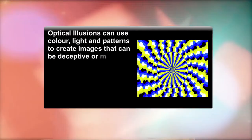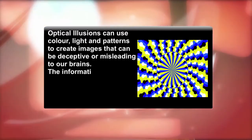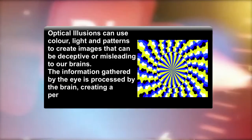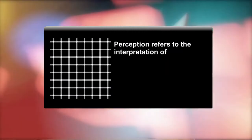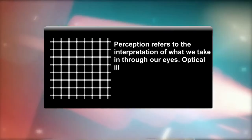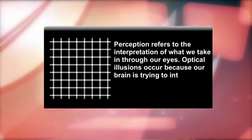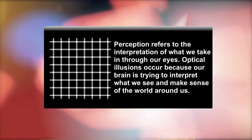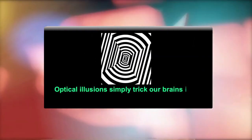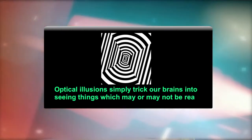Optical illusions can use colour, light, and patterns to create images that are deceptive or misleading to our brains. The information gathered by the eye is processed by the brain, creating a perception that does not match the true image. Optical illusions occur because our brain is trying to interpret what we see and make sense of the world around us, simply tricking our brains into seeing things which may or may not be real.